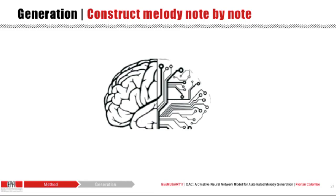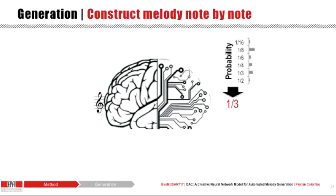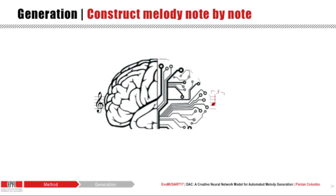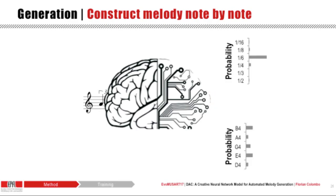After asking the model to start working, we observe the duration probabilities and sample one duration. Now that we have selected the first duration, we inform the model of this choice thanks to the feedback connections, and we can now observe and sample the pitch distribution, thus selecting the first note in a growing melody. Then we move on to the second note selection.